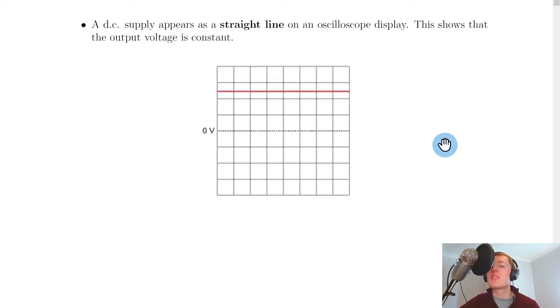And what do DC and AC signals look like on an oscilloscope display? Well, if we look at DC first, a DC supply appears as a straight line on an oscilloscope display. This shows that the output voltage is constant. So you can see we've got a non-zero value of voltage, and it's a straight line on the oscilloscope display.